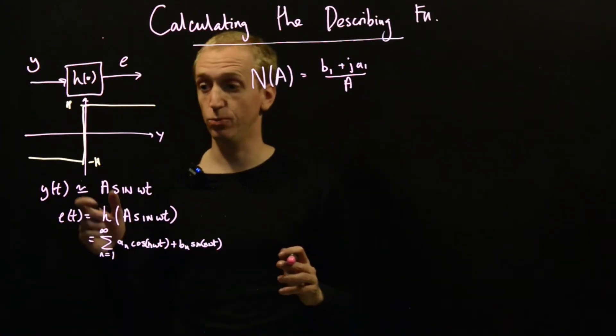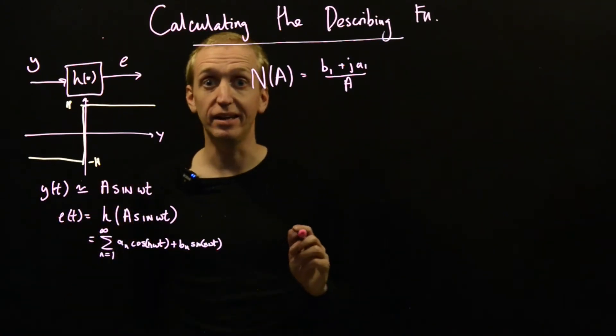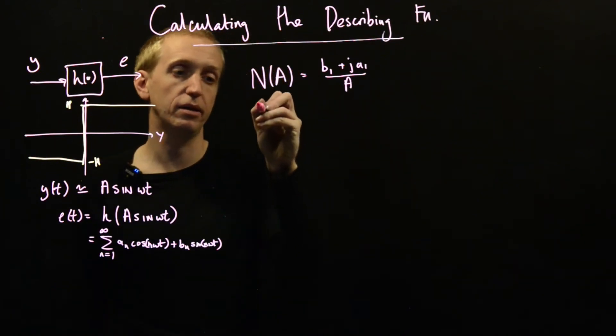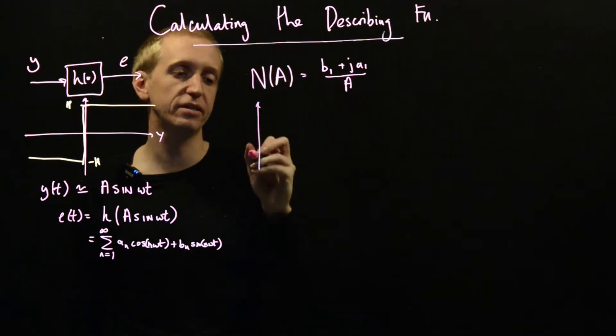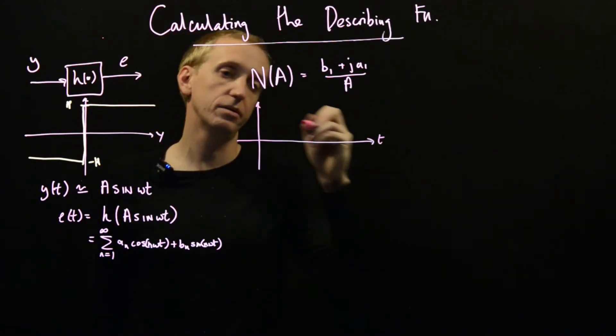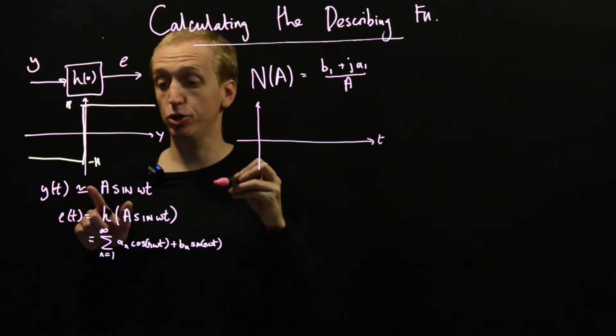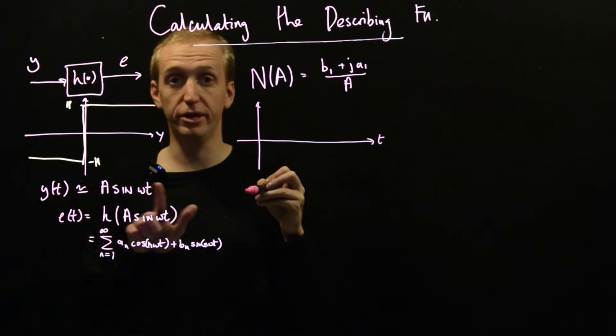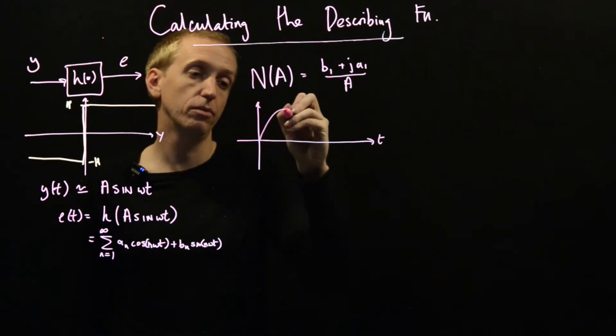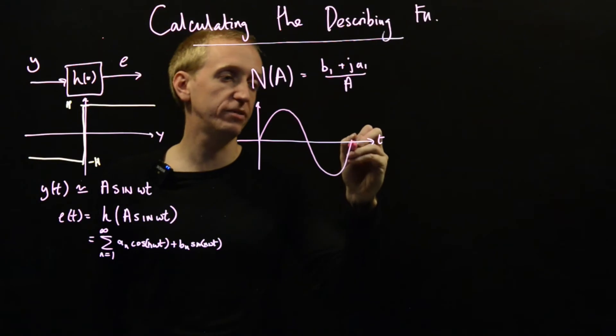And the first step in doing this is working out what the signal e(t) is going to be. And at least I think the best way to get a handle on this is to just draw a set of axes, something like this, and start just by drawing one period of the input y(t).